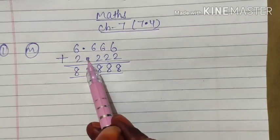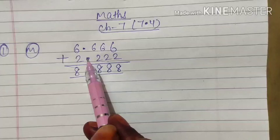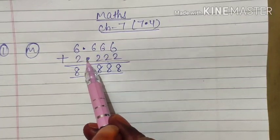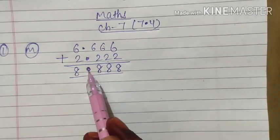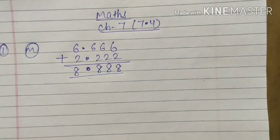What we have to take care is this decimal must be just above this decimal, or you can say this decimal must be just below this decimal. That means all the decimals must be in the same line. This only we have to take care.